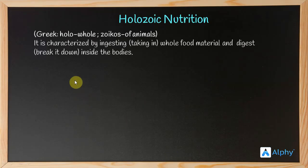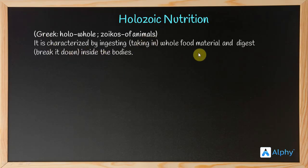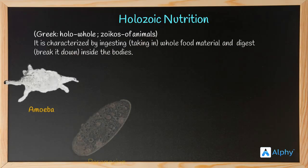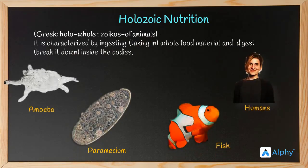In holozoic mode of nutrition, organisms ingest or take in the whole food material and then take it into the gut where digestive enzymes or juices are secreted by various glands or organs, leading to digestion inside their bodies. Examples include amoeba, paramecium, fish, and humans — both unicellular organisms and higher animals.